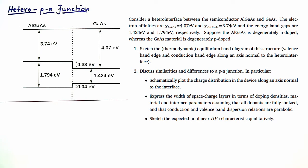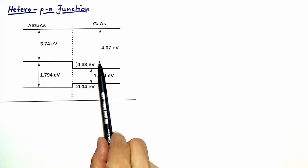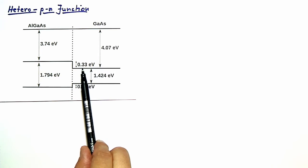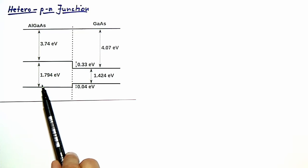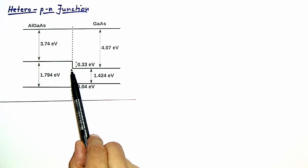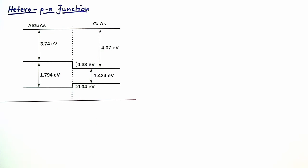This problem generalizes the standard p-n junction to a so-called hetero p-n junction, where the transition between the p and n regions is accompanied by a change of material. In the problem, a number of quantities are given: the electron affinity of gallium arsenide of 4.07 eV, the affinity of aluminium gallium arsenide of 3.74 eV, the band gaps of 1.794 eV and 1.424 eV, and from this one gets the band offsets of 0.33 eV and 0.04 eV.